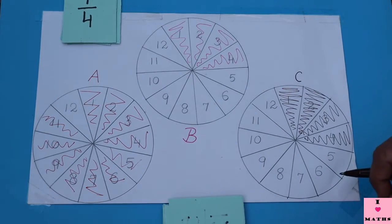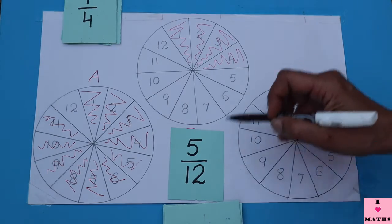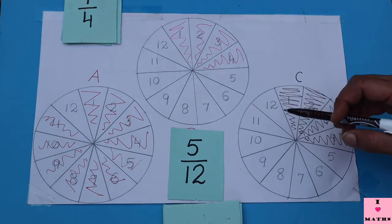Now it is B's turn. Five out of twelve. B has to color five more parts.